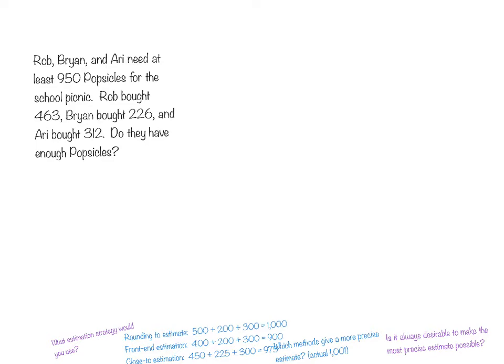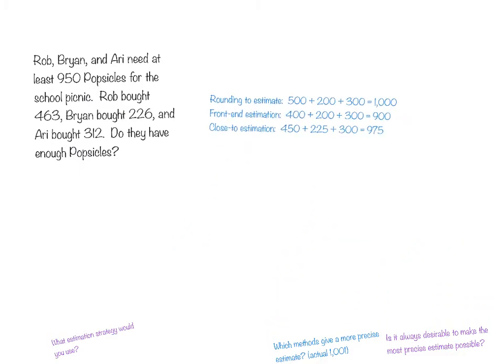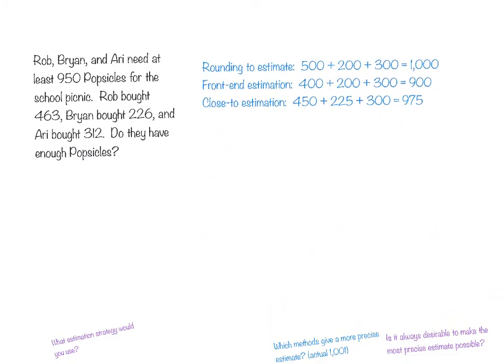Our estimation strategies. If we use the rounding to estimate, we would come up with 500 plus 200 plus 300 is going to give us 1,000. If we use front end estimation, we're going to get 400 plus 200 plus 300, which gives us 900. Or if we use close to estimation, we're going to have 450 plus 225 plus 300, which equals 975. We already know since this problem uses the same numbers as the last one that the exact answer is 1,001.